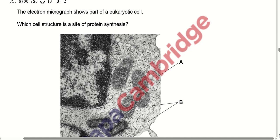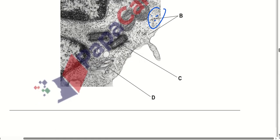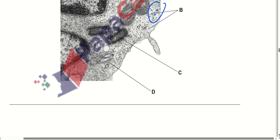The electron micrograph shows part of a eukaryotic cell. Which cell structure is the site of protein synthesis? We can see small, tiny granules spread throughout the cell — these are the ribosomes. They are responsible for protein synthesis. Option B is correct.